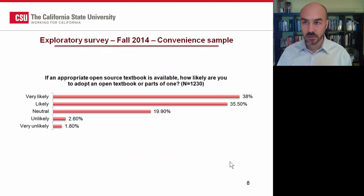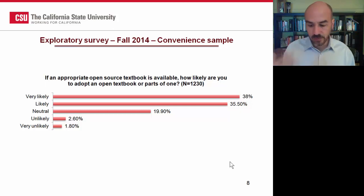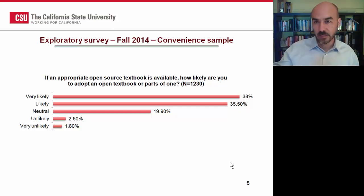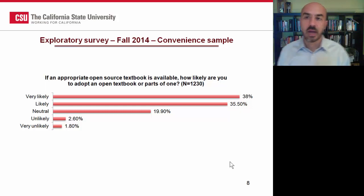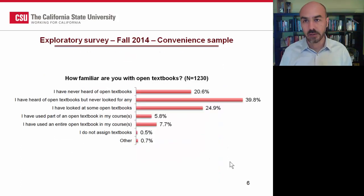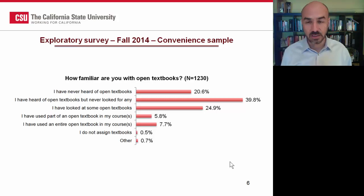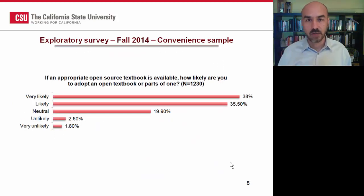The next graph signals the total of people who felt it was likely they would adopt an open textbook. More than 70% answered that they were very likely or likely to adopt a textbook. This has to be taken with a grain of salt because, as we saw a couple of graphs ago, many of them were just becoming informed about what open textbooks were — they were not really knowledgeable and received most of this information at the time of the survey.